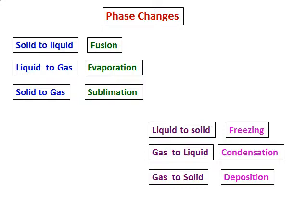In sublimation, the solid doesn't go into the liquid state — it goes directly into the gas state. The opposites: when a liquid becomes a solid, we call it freezing. When a gas becomes a liquid, it's condensation. And when a gas goes directly into a solid, we call it deposition.